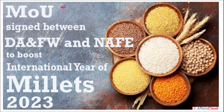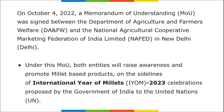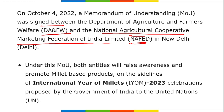The first news: an MOU was signed to boost millets. As we know, 2023 will be celebrated as the International Year of Millets. To create awareness and promote millet-based products, two organizations — the Department of Agriculture and Farmers Welfare (DAFNW) and NAFED (National Agriculture Cooperative Marketing Federation of India Limited) — signed an MOU. This will help raise awareness about the promotion of millet-based products.